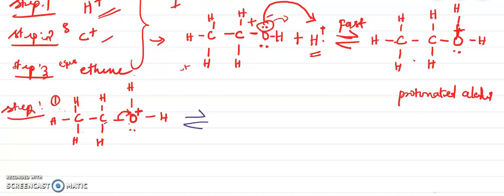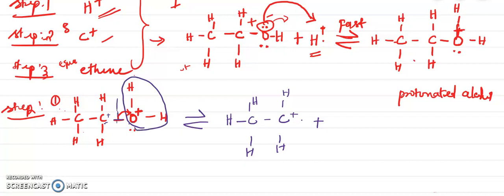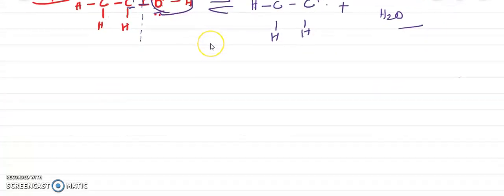The C-O bond breaks in this equilibrium reaction, and we get a carbocation: CH₃CH₂⁺. The bond between carbon and oxygen is cleaved, and H₂O is eliminated. As stated earlier, this is a removal reaction — removal of the water molecule — which is what dehydration means.